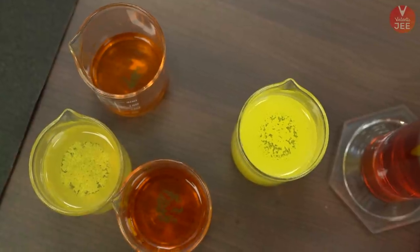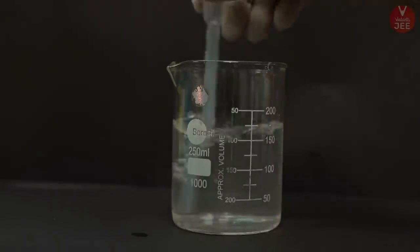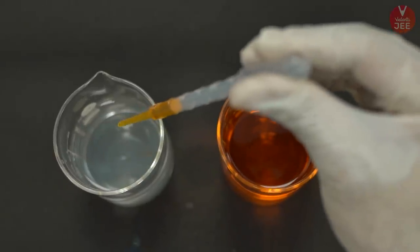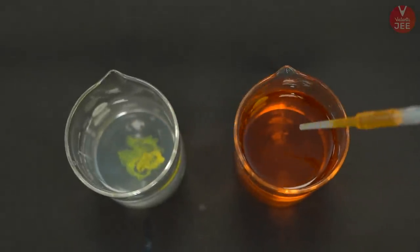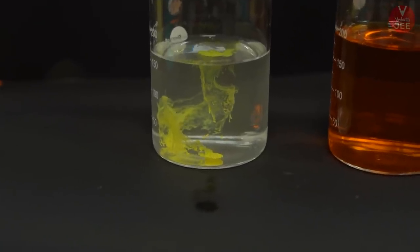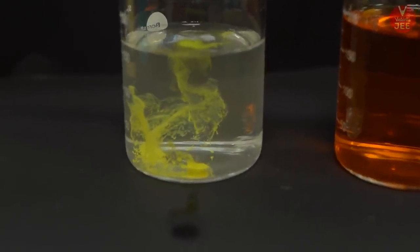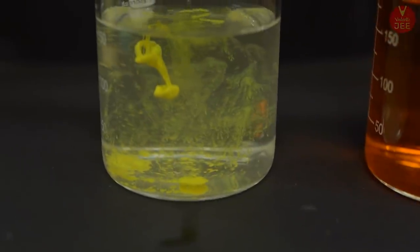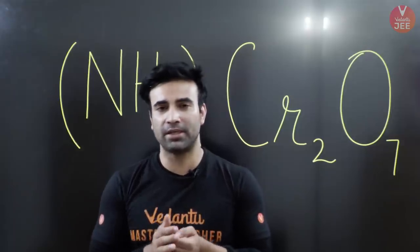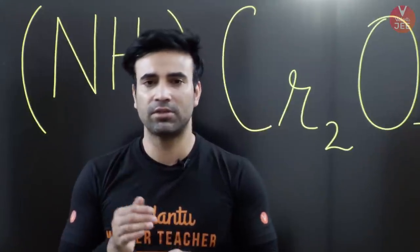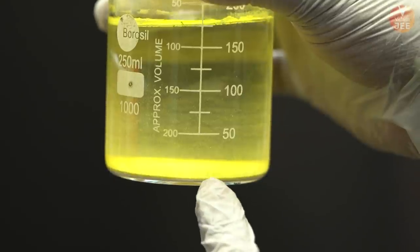The next thing I want to discuss is the beautiful precipitate formed when we mix the solution of ammonium dichromate with lead acetate solution. Both solutions are very clear, but the ammonium dichromate solution is orange. If I put a drop of ammonium dichromate into the lead acetate solution, we get a beautiful swirling motion of a bright yellow precipitate which slowly settles down at the bottom of the beaker.